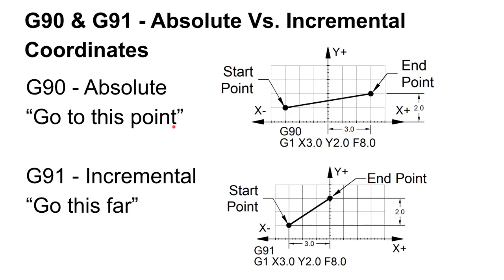A fundamental concept to review is the difference between G90 and G91 — absolute versus incremental programming. Both code snippets start at the same point: negative three in X and positive one in Y. In G90 absolute mode, executing G1 X3 Y2 F8 moves the tool to position X3 Y2 — the actual coordinates. In G91 incremental mode, X3 Y2 means move 3 inches in X and 2 inches in Y from wherever you currently are.